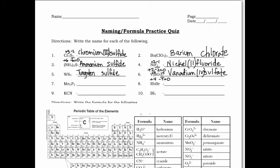Number seven: be careful — it is manganese, not magnesium. Phosphorus becomes phosphide. Manganese has more than one positive oxidation number, so we figure out what it is based on phosphorus, which has a negative three. There are two phosphorus atoms for a total of negative six. It has to total zero, so manganese must total plus six. Since we have three manganese atoms, we divide six by three to get plus two. Roman numeral two goes in the name — manganese(II) phosphide.